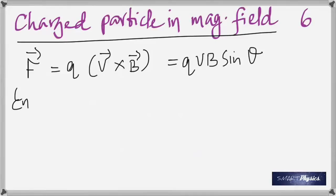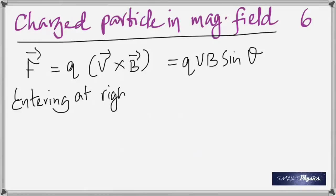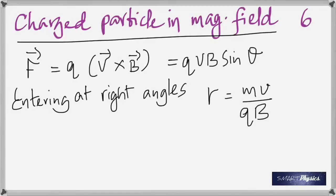Maximum force occurs when the velocity is perpendicular to the field, giving F = QvB (since sin 90° = 1). If the field is large enough, the particle moves in a circle where centripetal force equals QvB. Setting them equal gives the radius r = mv/QB. It's always good to know how a formula is derived.